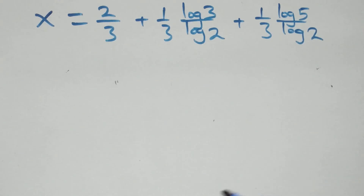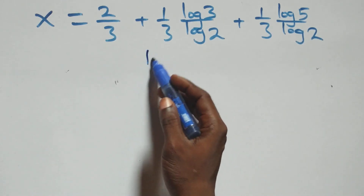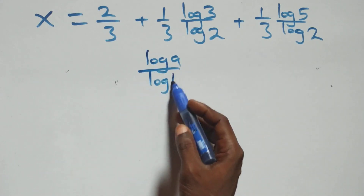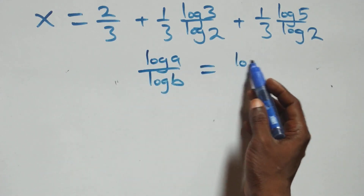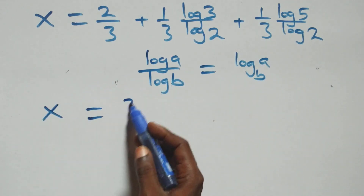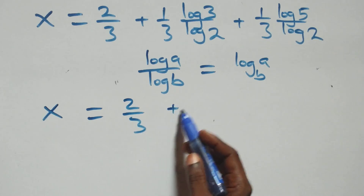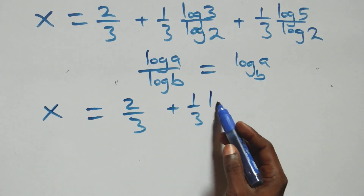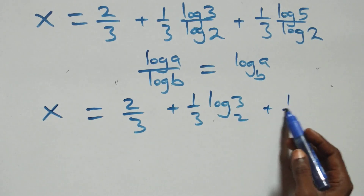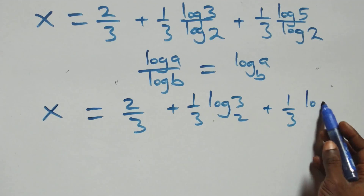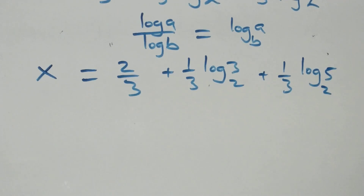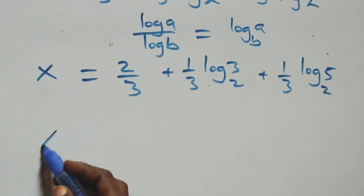We apply the change of base formula: log a over log b is the same thing as log a to base b. So all we have becomes x equals to 2 over 3 plus 1 over 3 times log 3 base 2, plus 1 over 3 times log 5 base 2.